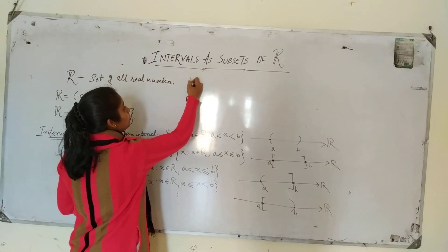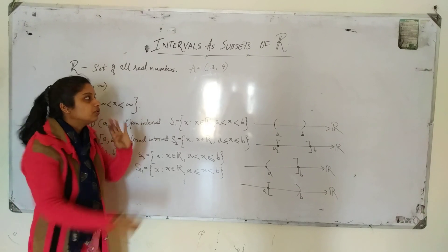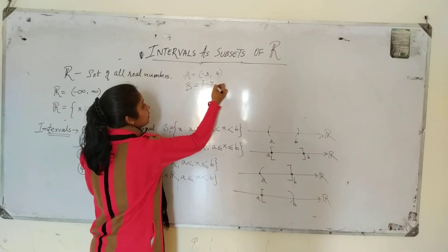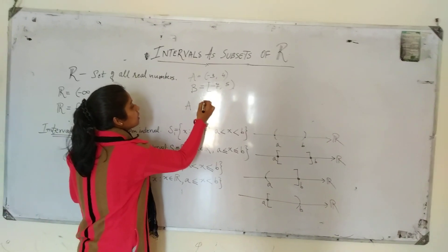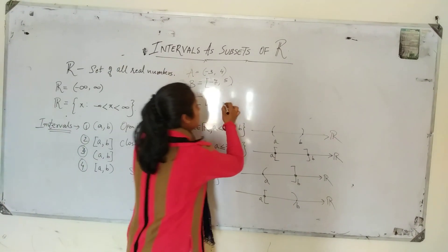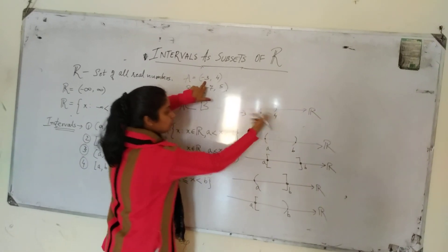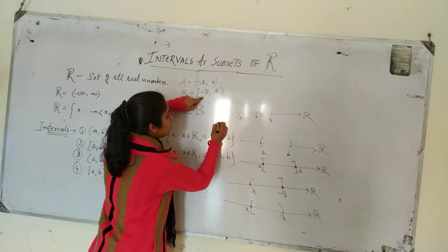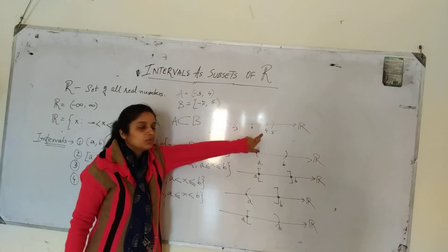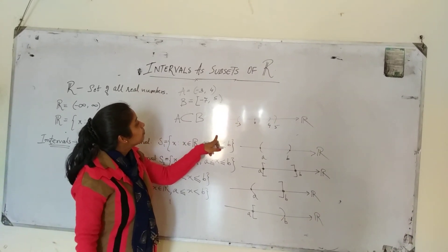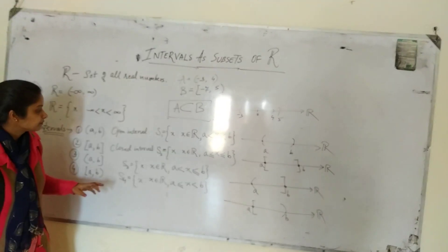Let's take one example. Suppose A is the open interval (−3, 4) and B is the open interval (−7, 5). On the number line, the interval A from −3 to 4 is entirely contained within the interval B from −7 to 5. So we can say that A is a subset of B.